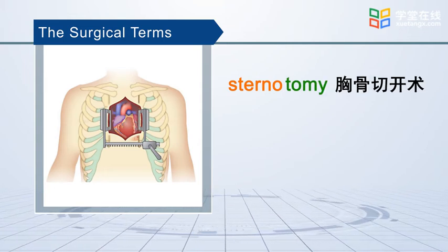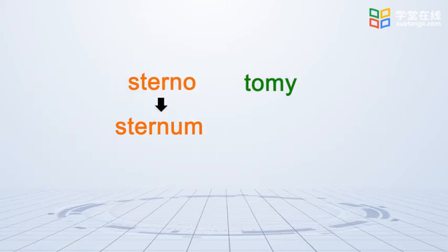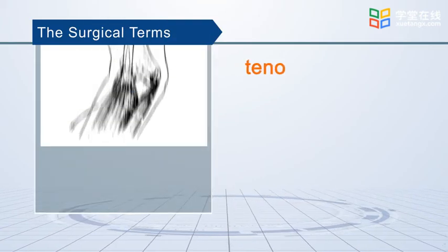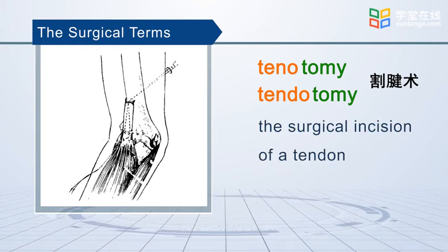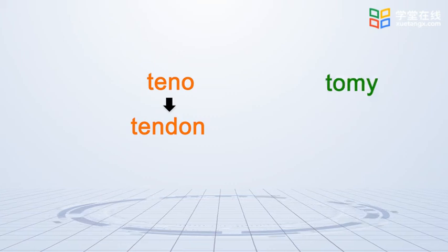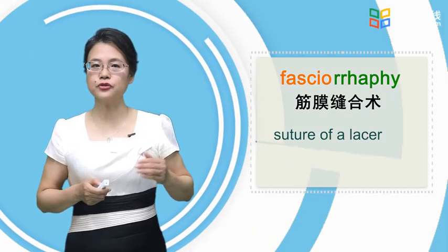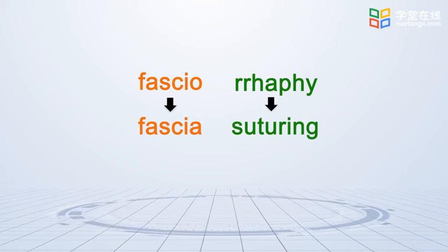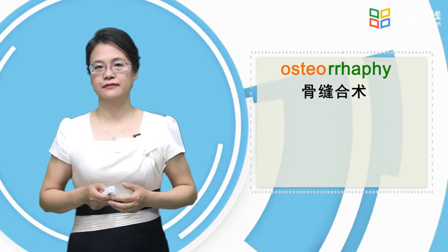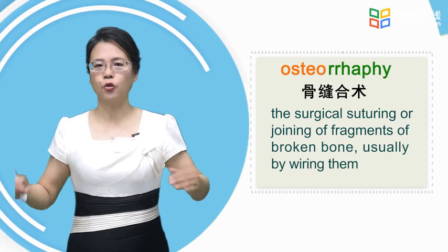Sternootomy means an incision into or through the sternum. Osteorrhaphy means the suture of a luxated fissure. Osteosynethesis means the surgical suturing or joining of fragments of broken bone, usually by wiring them together.